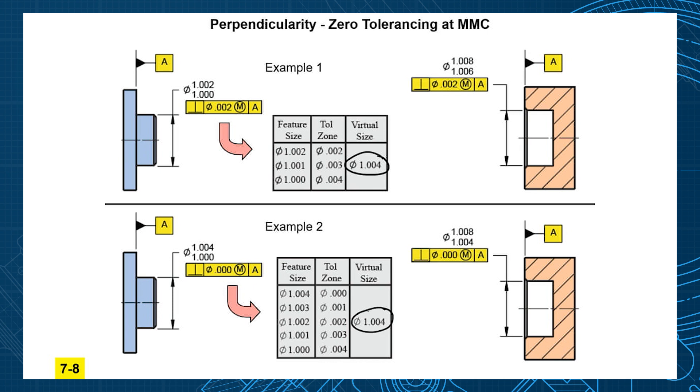However, manufacturing likes the second one. Example two gives you more size tolerance. This one gives you a plus or minus two on the size, where the earlier one gives you a plus or minus one on the size. Example one forces you to take some of the size tolerance to give it perpendicularity, where the example two says, here's four, do whatever you want with it.